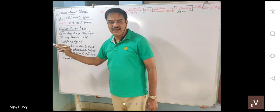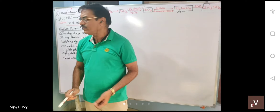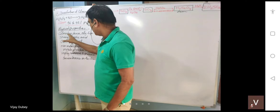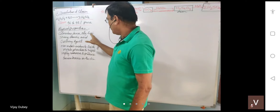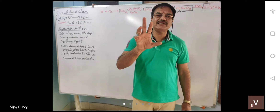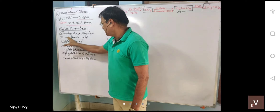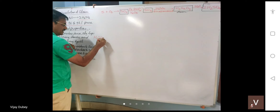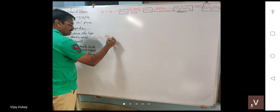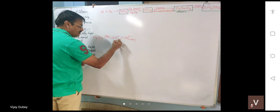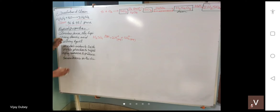Sulfuric acid is a colorless, dense, oily liquid. It is a strong dibasic acid — 'dibasic' means it provides 2H⁺ ions when dissolved in water: H2SO4 → 2H⁺ + SO4²⁻ (aqueous). HCl gives 1H⁺ so it is monobasic; H3PO4 gives 3H⁺ so it is tribasic. The basicity of an acid refers to the number of H⁺ ions it can provide.